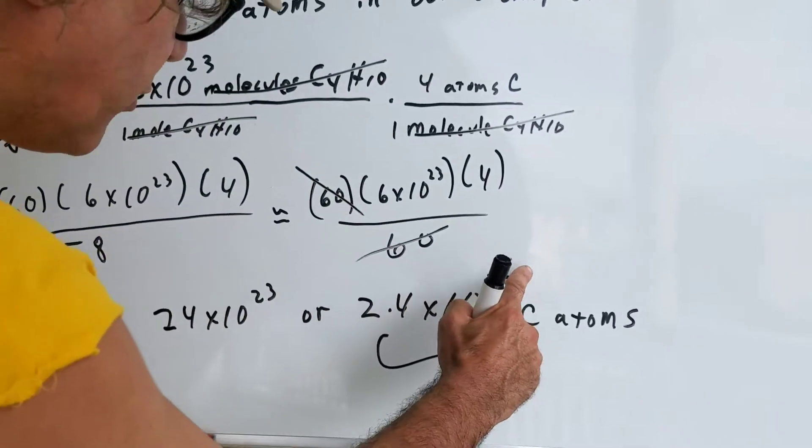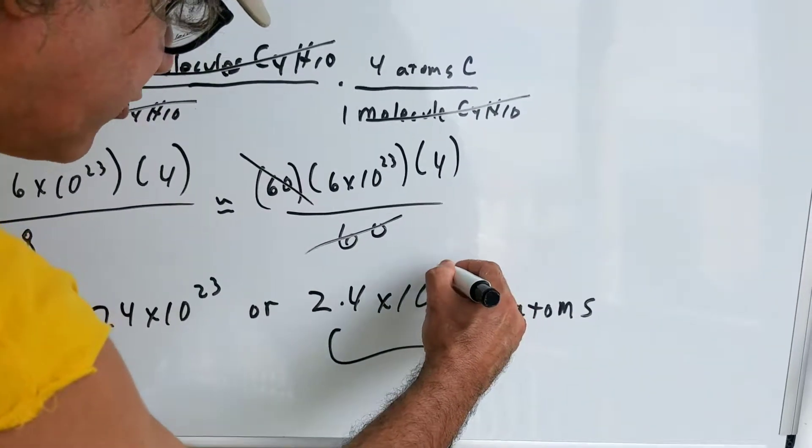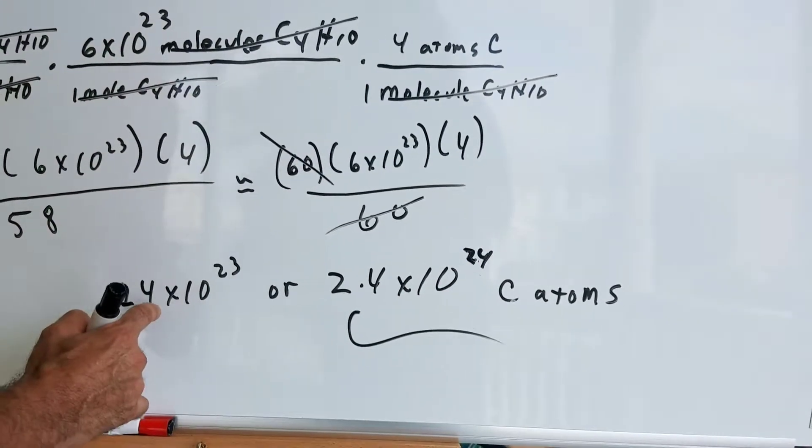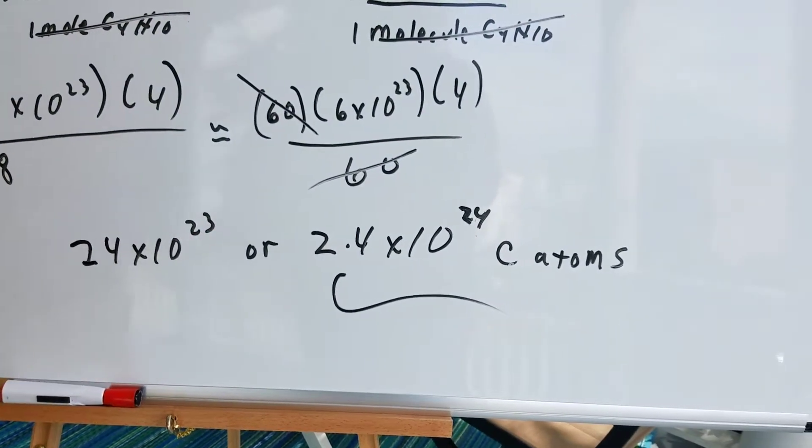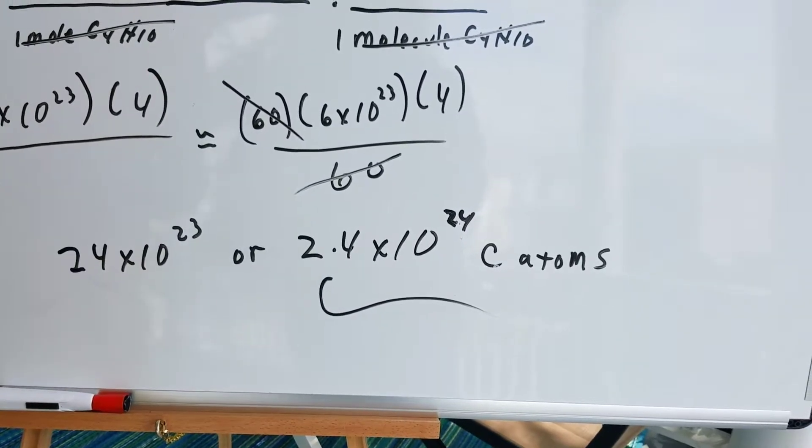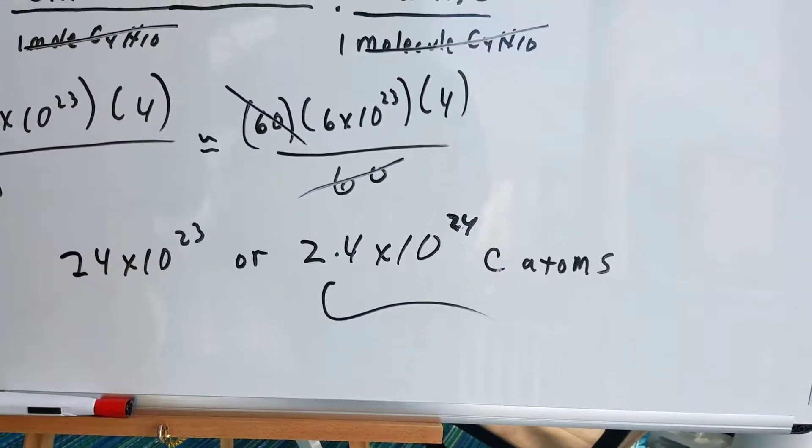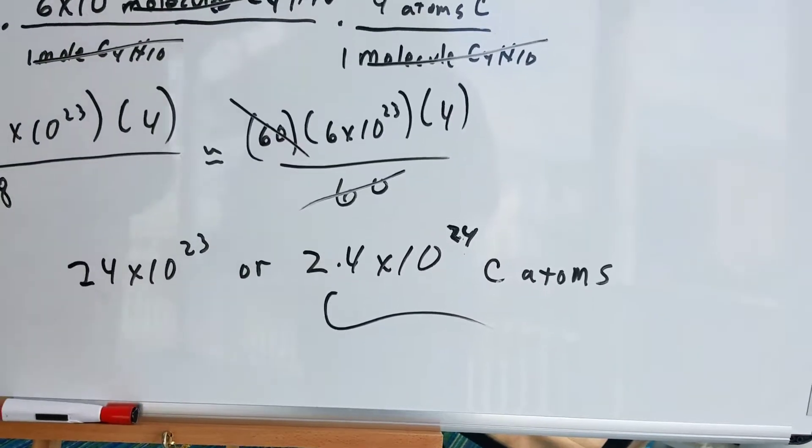So that would give me, oops-a-daisy, that should be to the 24th. So if I move this back, I move this up. So 24 to the 23rd is the same as 2.4 times 10 to the 24th carbon atoms.